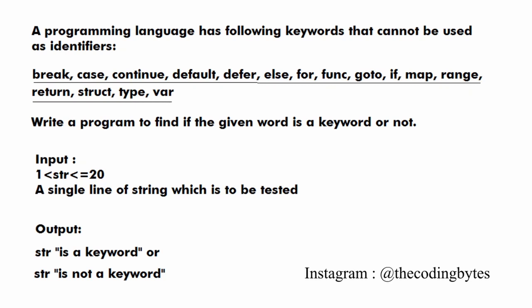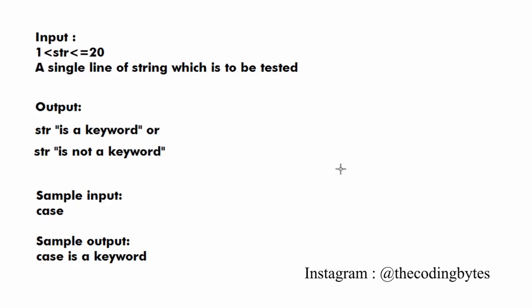You are given a list of some keywords like break, case, continue, default, etc. You have to write a program to find if the given word is a keyword or not. You will be given an input string and you have to print whether that string is a keyword or not. For example, if the input is 'cache', the output will be 'cache is a keyword', because it is part of the given keywords.